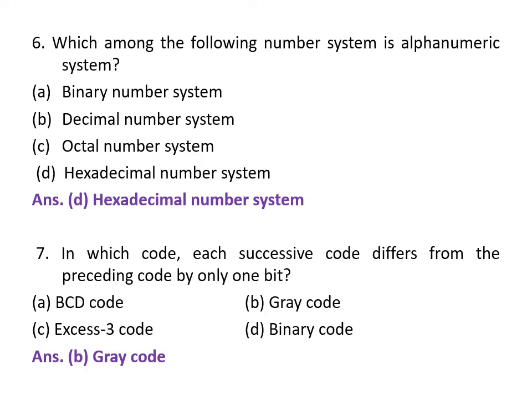That is why it is known as alphanumeric system. 7th question is: In which code each successive code differs from the preceding code by only 1 bit? A. BCD code, B. Gray code, C. Excess-3 code, D. Binary code. The correct answer is Gray code.